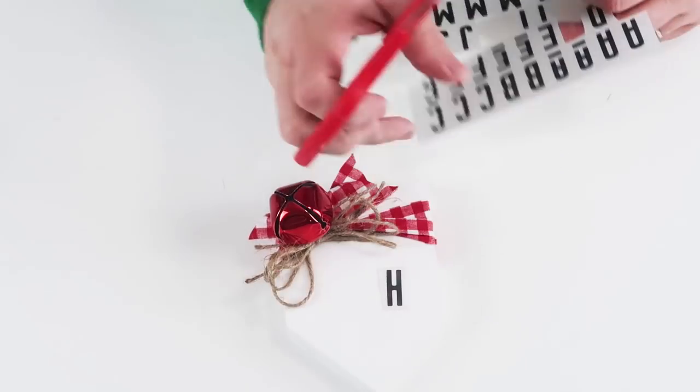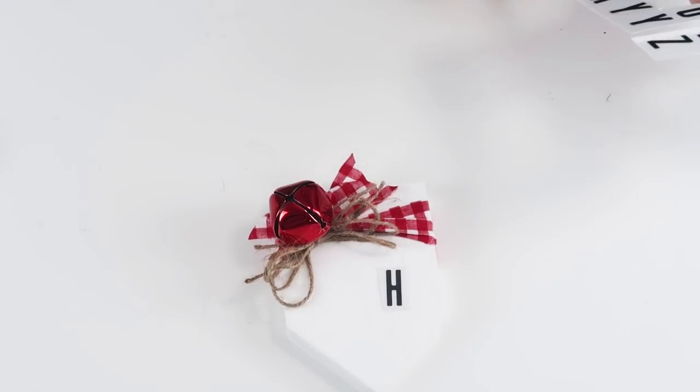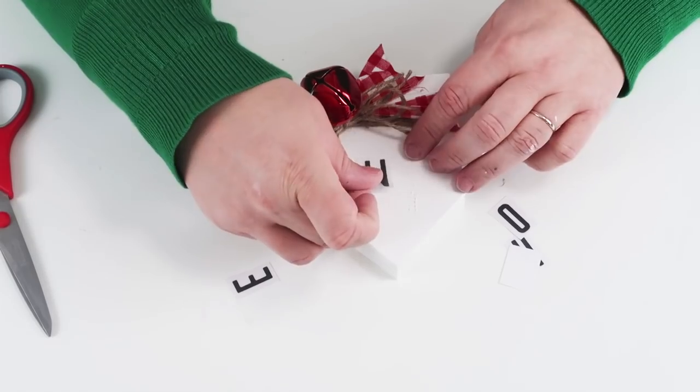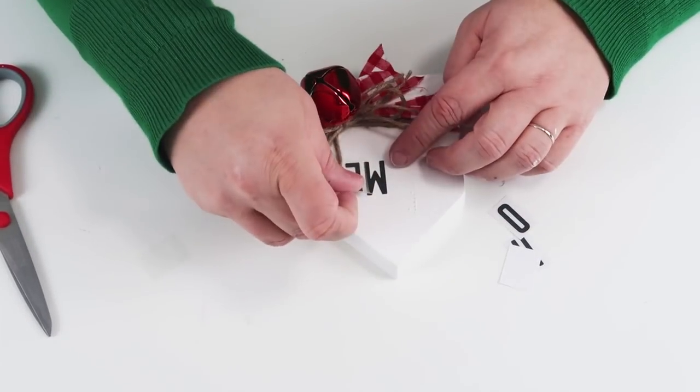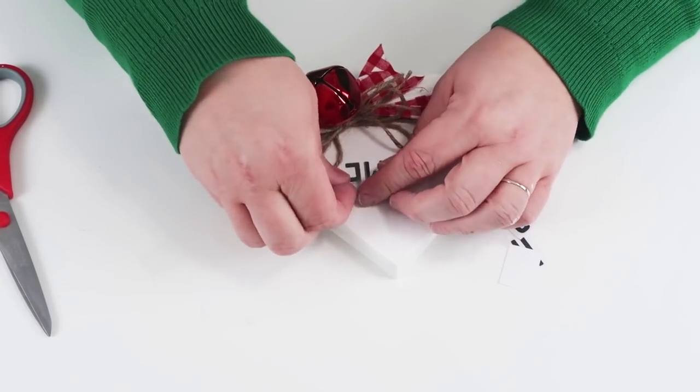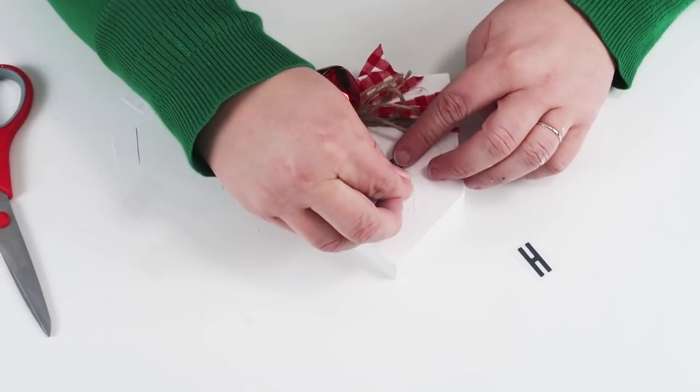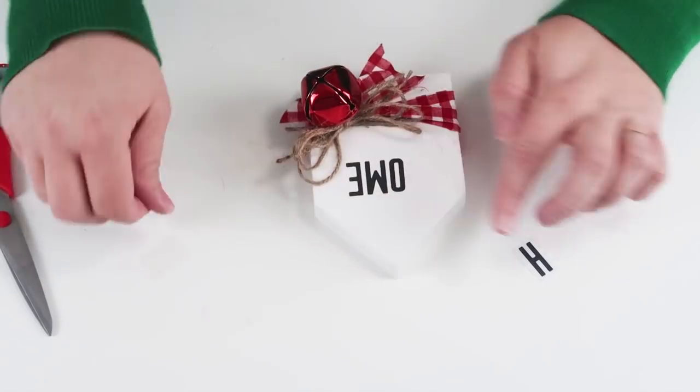You just simply cut out the letters that you need, peel off the little white paper on the back, rub them down, lift up the little clear piece of plastic on the front, and then you have the cutest little custom sign.